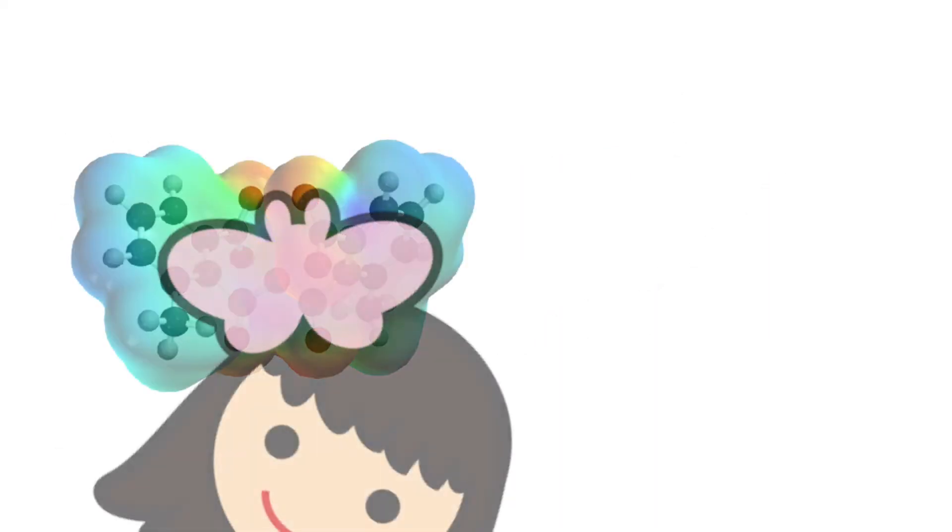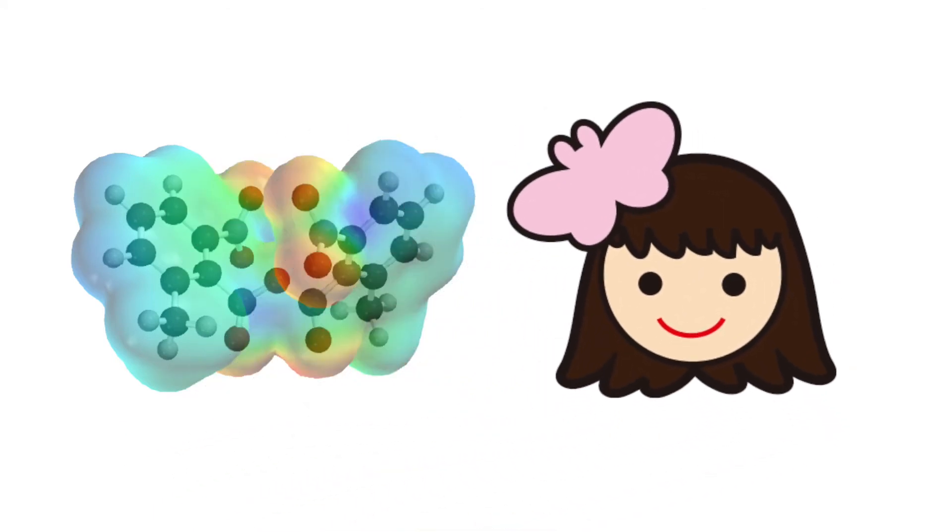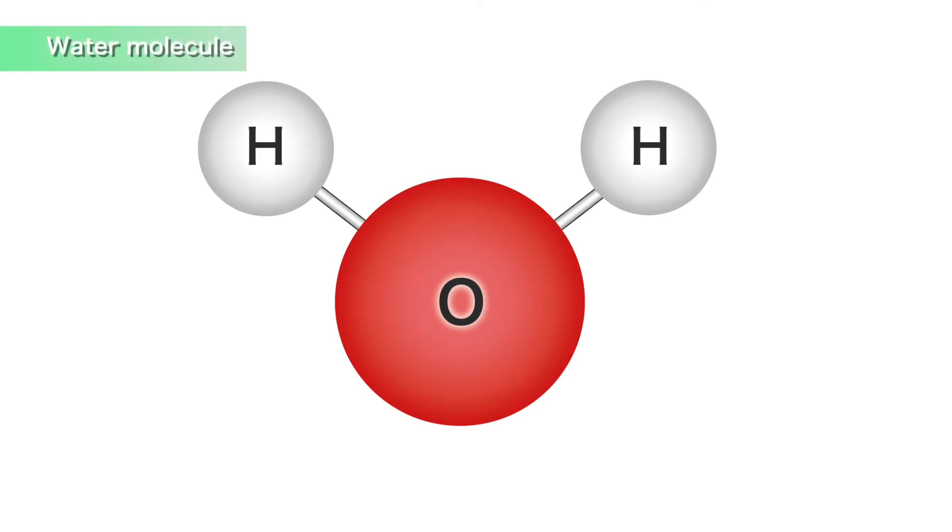To understand how it works, let's turn MNBA into a character. Now, as you probably know, water is made out of two hydrogen atoms with one oxygen atom.